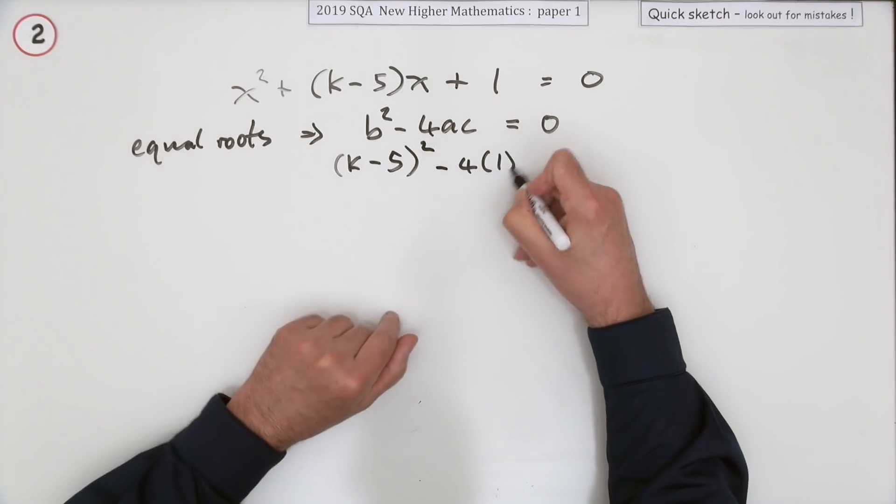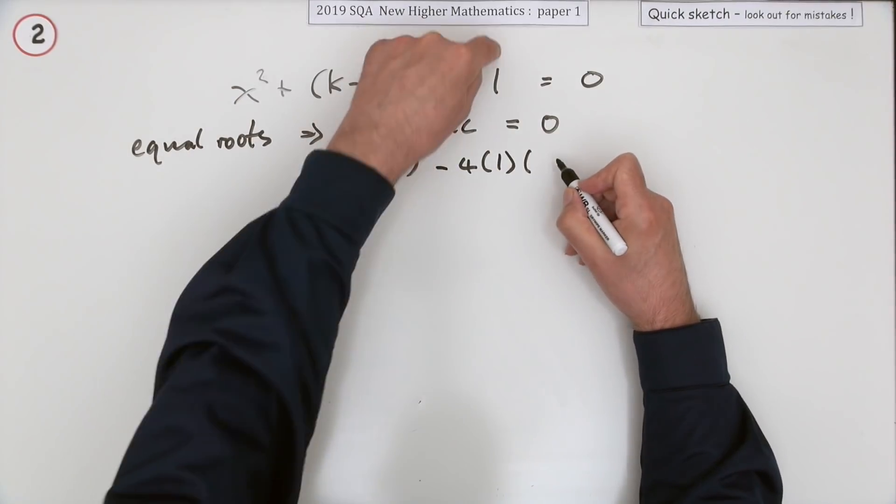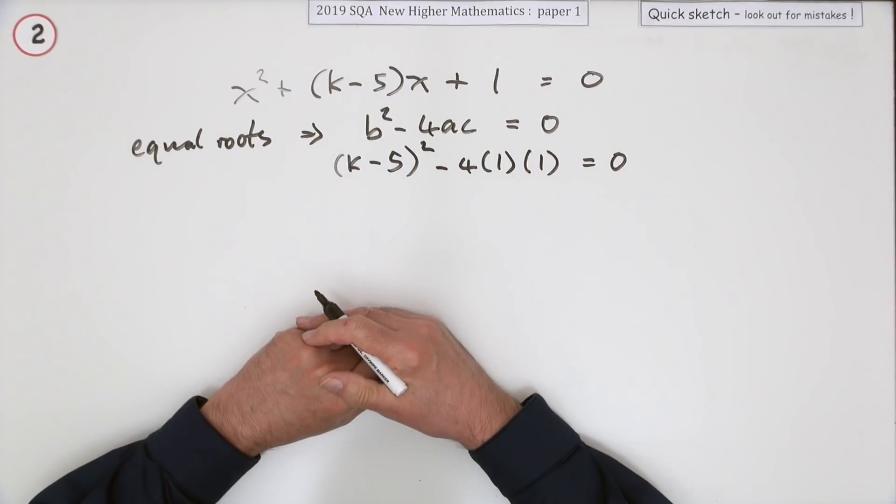So b is k minus 5. So k minus 5 squared minus 4 times, you know, placeholder for it, it's just a one for a. What's the constant at the end? It's just a one. That should come to zero.